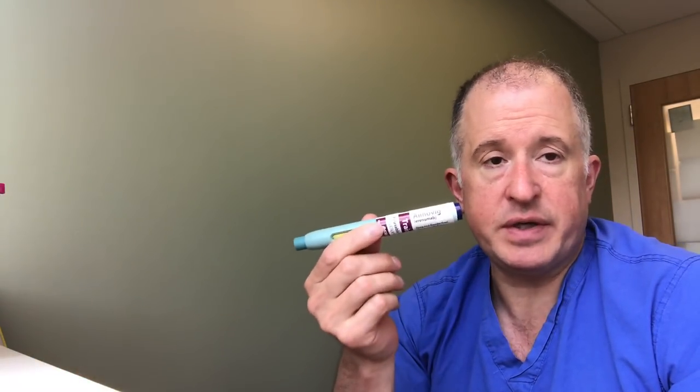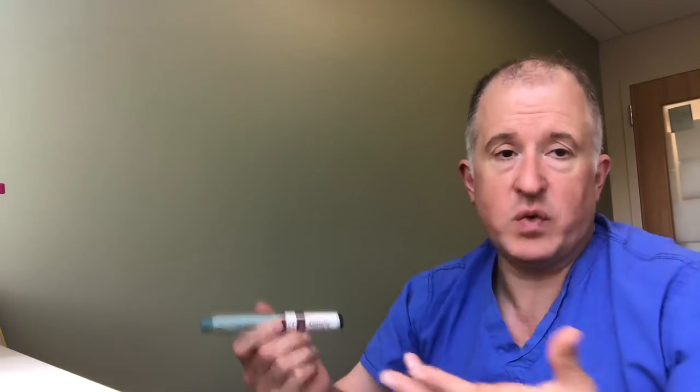When a patient does a 140 milligram dose, they're simply going to use one injector on one side of their body and the other injector on the other side and follow the same steps.